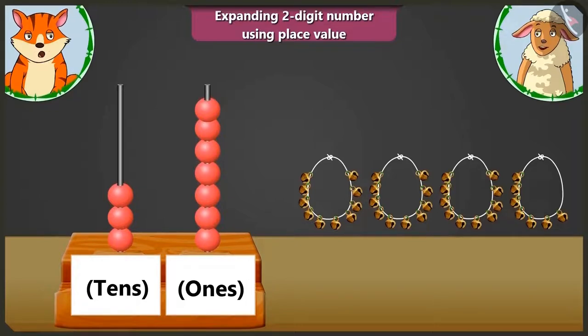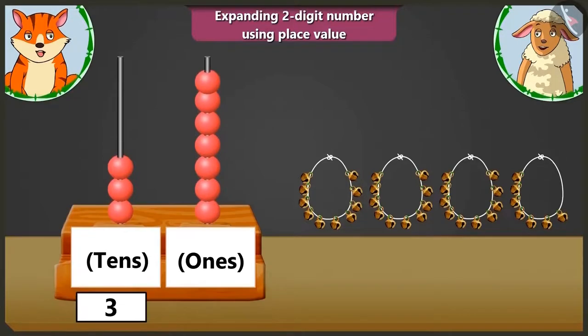Can you tell me what number the remaining beads on the abacus make? Think about it and tell me. Look, on this abacus, here in the tens box, there are one, two and three beads available. So we will write that first.